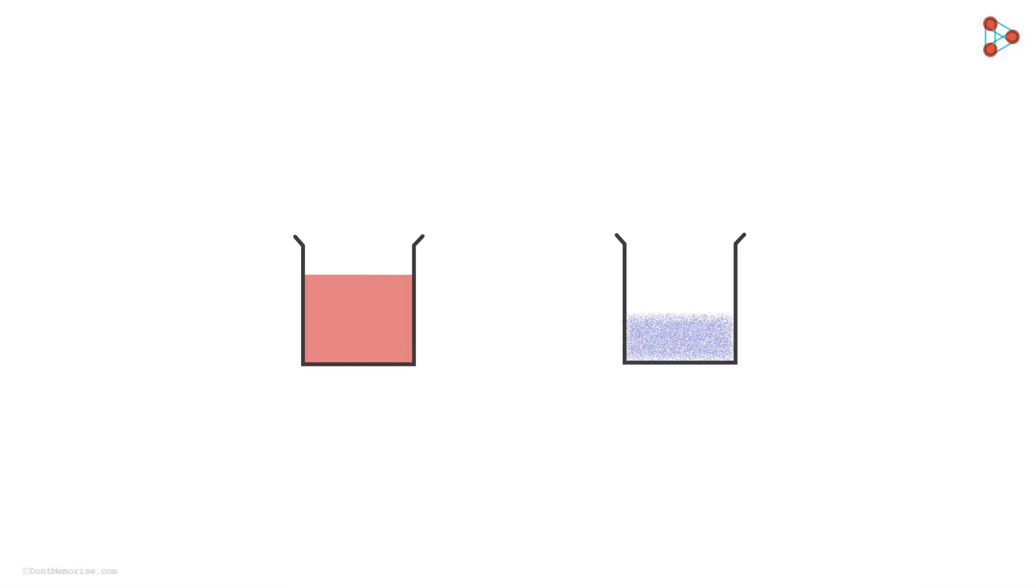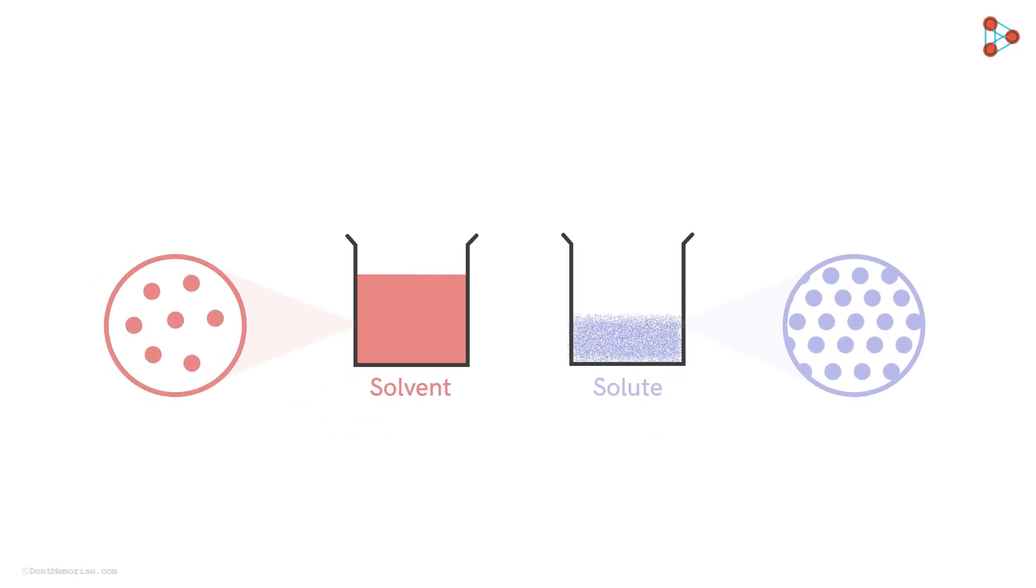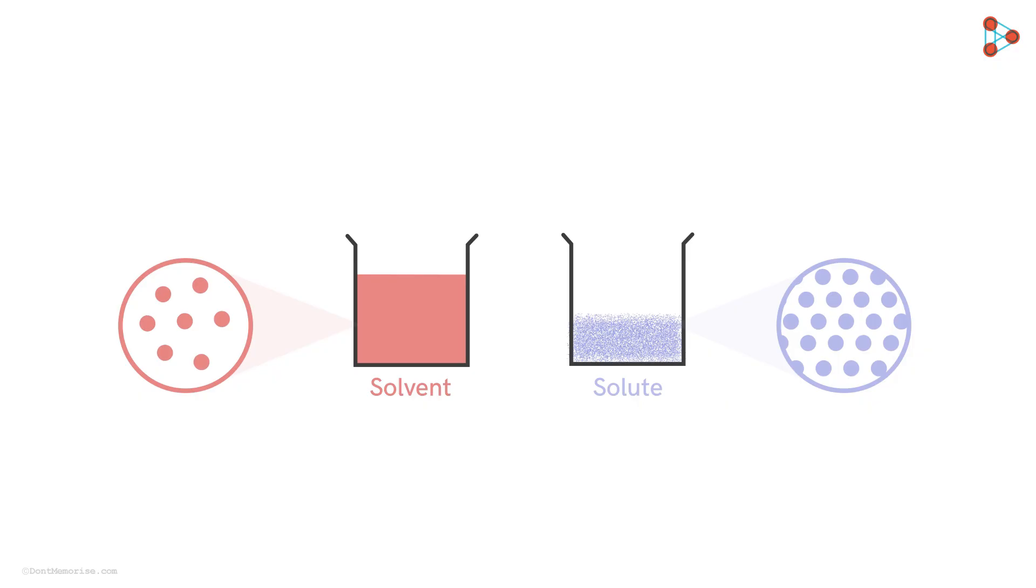Let's say we want to form a solution of these two substances. This is our solvent and this is our solute. Now, we will have a look at their molecules to understand whether they will form a solution or not.